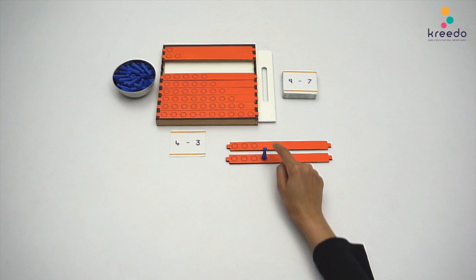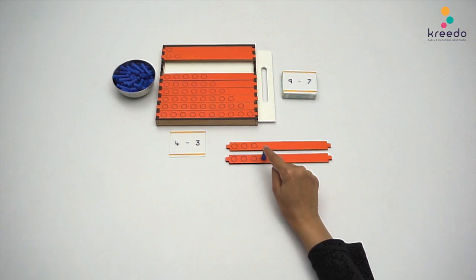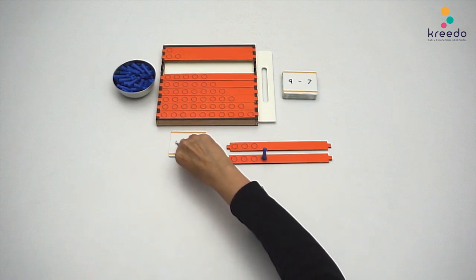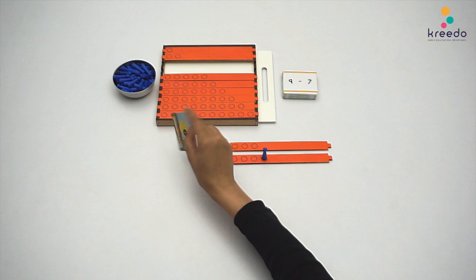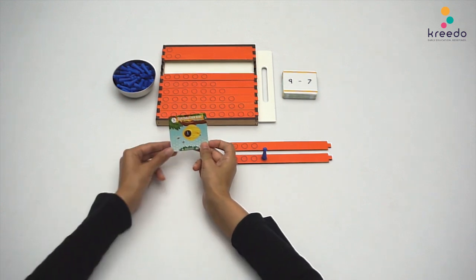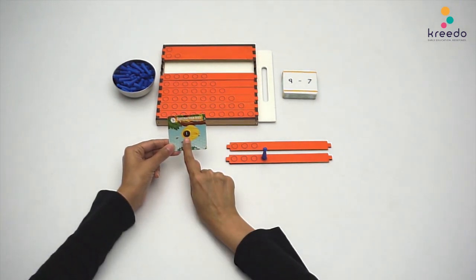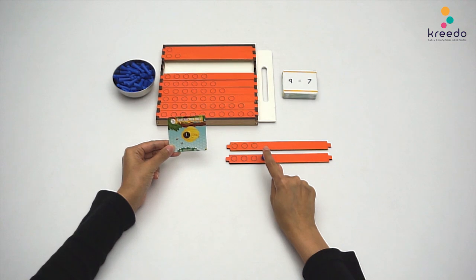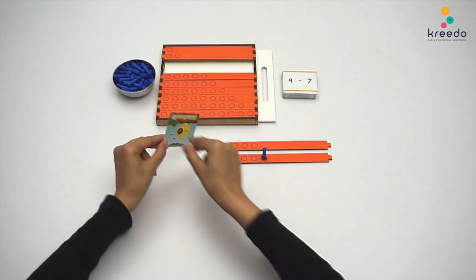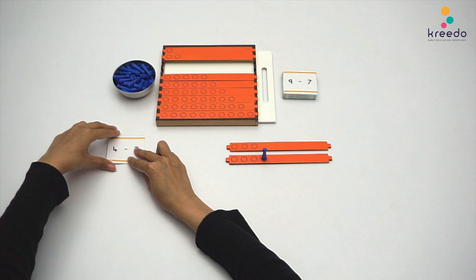Point to the strips and tell the child the difference between 4 and 3 is 1. Ask the child to turn over the card and match the difference: 1, 1. Ask the child to keep the materials back in their place.